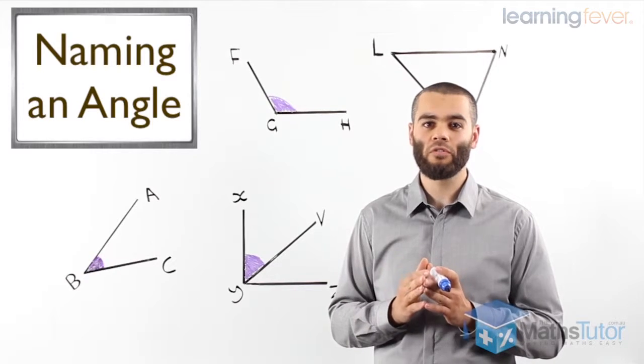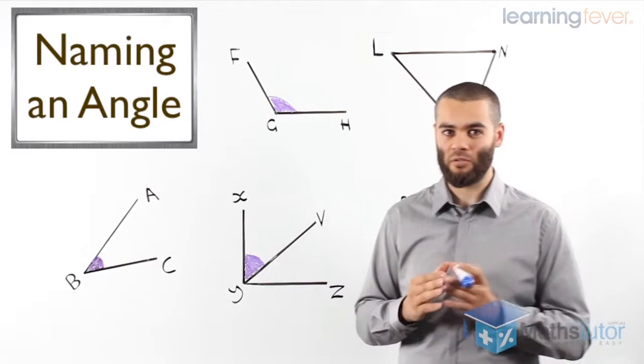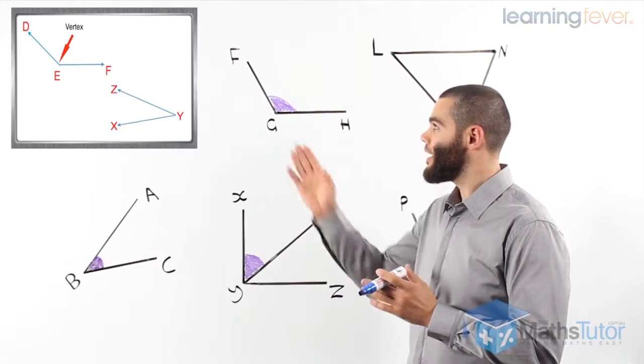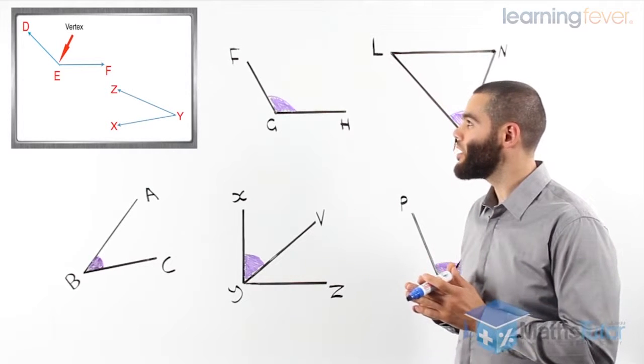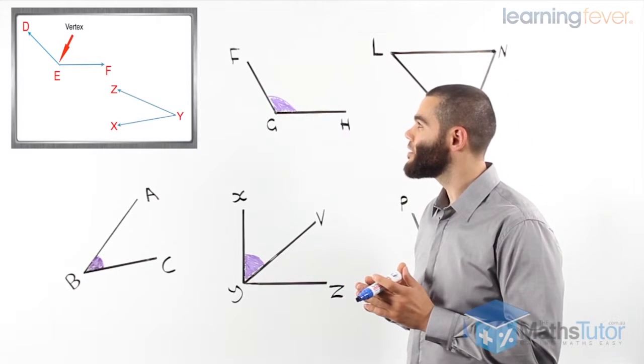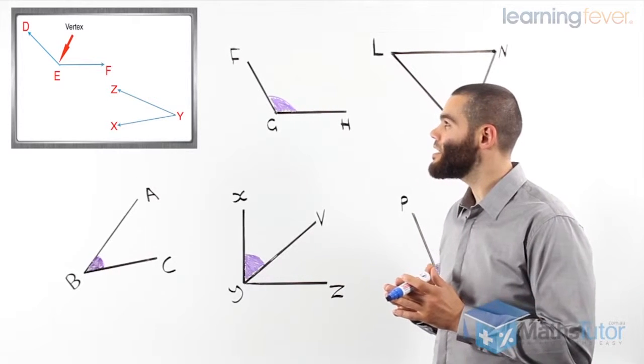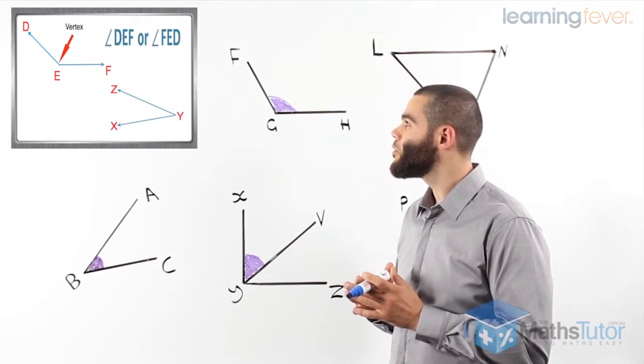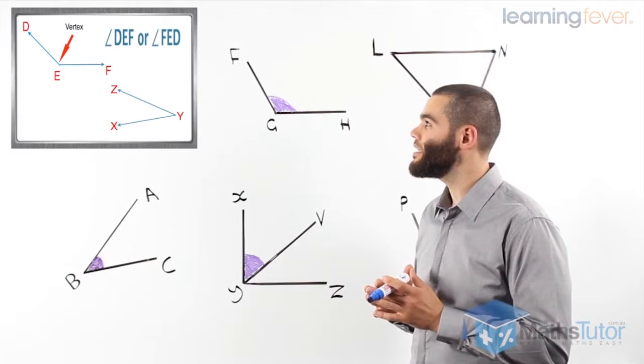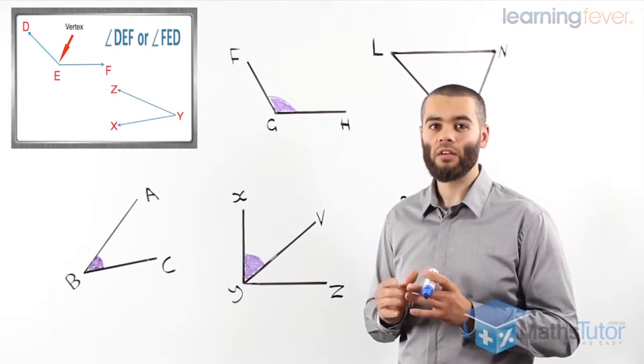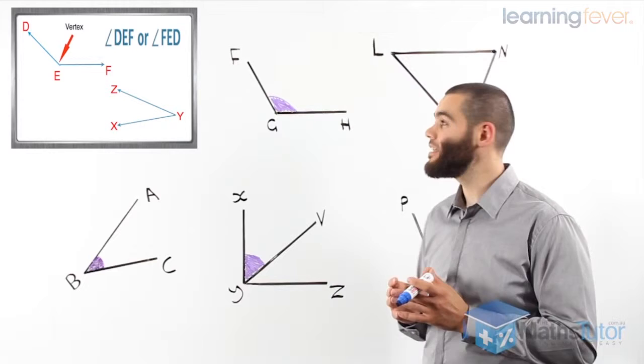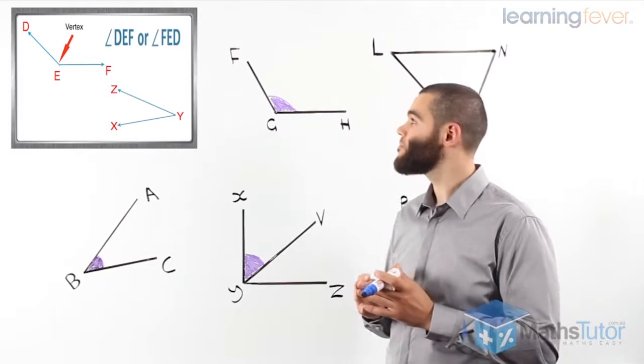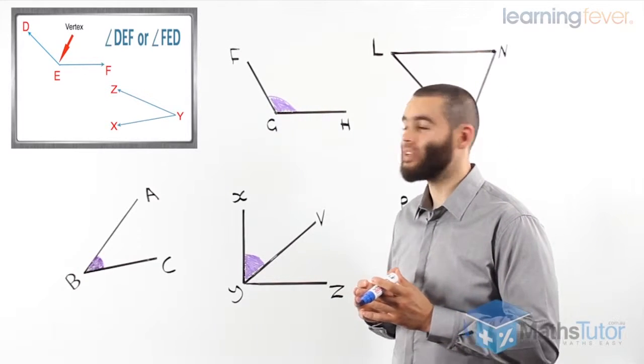Let's see what we're referring to when we're talking about names of angles. As you can see, we have two angles up top and we have already named them already. And as you can see, we have an angle that is marked with a D, an E and an F. And this angle, when we name it, we can name it this way: angle DEF or angle FED. Notice how the vertex, which is in the corner there, the corner where the two arms meet, is marked with an E. The vertex has to always be in the middle.